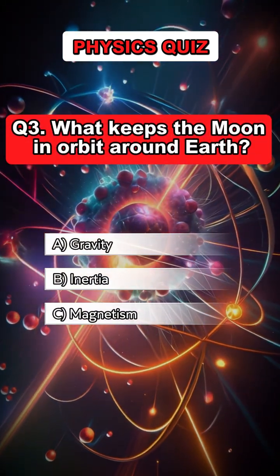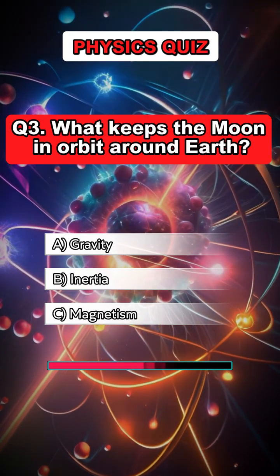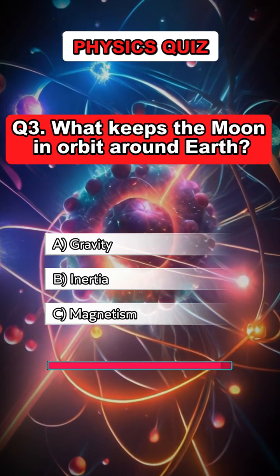Question 3. What keeps the moon in orbit around Earth? Answer A: Gravity.